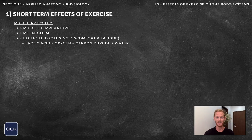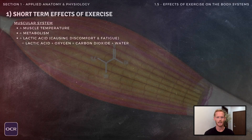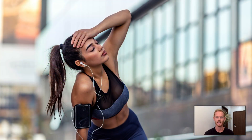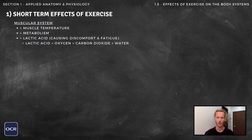The immediate effects of exercise on the muscular system include a rise in muscle temperature and metabolism due to an increase in the amount of energy used by the muscles. Lactic acid is released in response to high intensity or anaerobic exercise, causing discomfort and muscle fatigue, leading to a reduction in intensity or the need to stop and rest. Only when resting can sufficient oxygen be delivered to break down the lactic acid, which is broken down in the presence of oxygen into carbon dioxide and water.